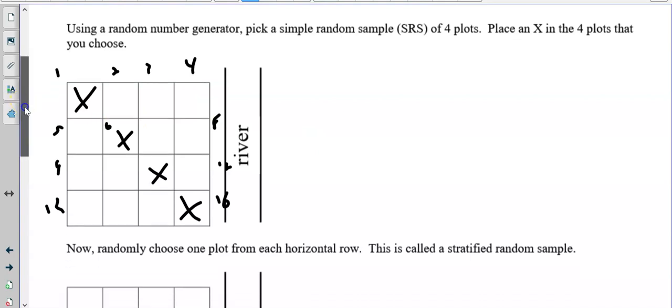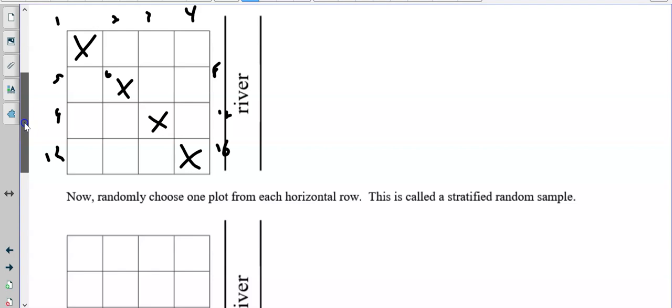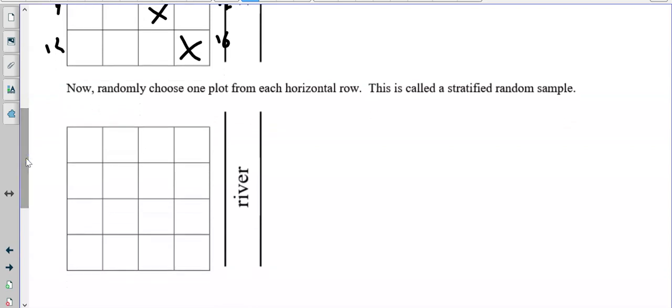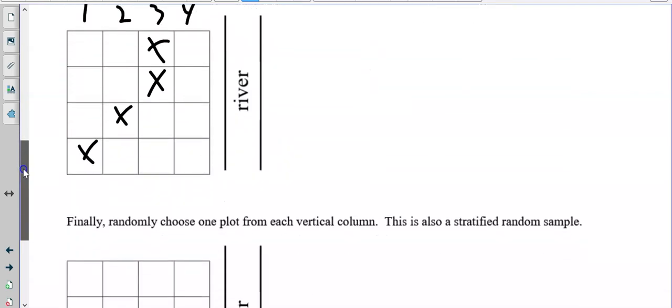Now it says randomly choose one plot from each horizontal row. This is called a stratified sample. So randomly, basically each one of these is going to be one to four. And we're going to choose. So go to your random generator, hit pause and do one to four this time. And pick four. I got three, three, two, one. Too bad I didn't get a four. That is a stratified sample because I chose one from each geographical group. So we call them rows. If you remember the other day, we circled groups of five and did cluster and stratified. This is stratified.